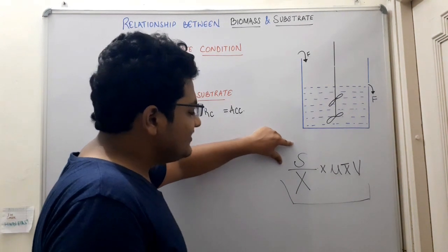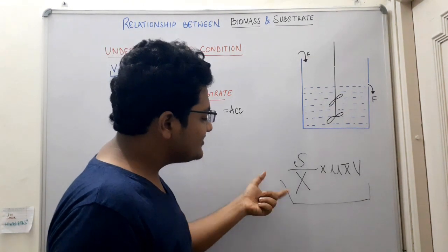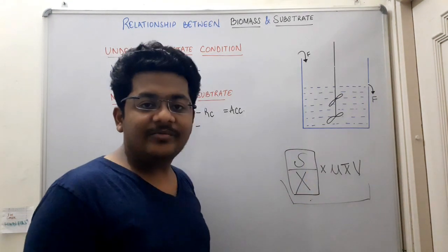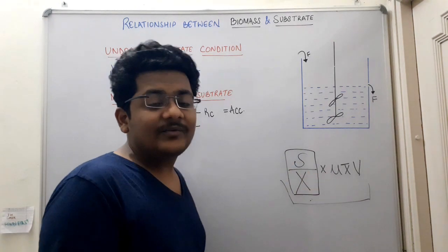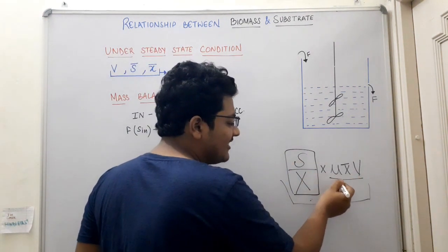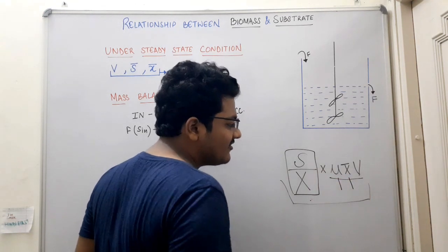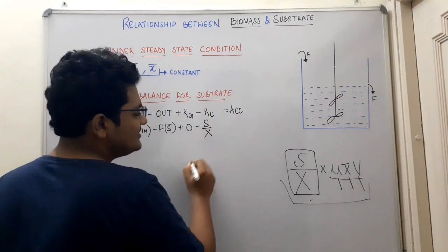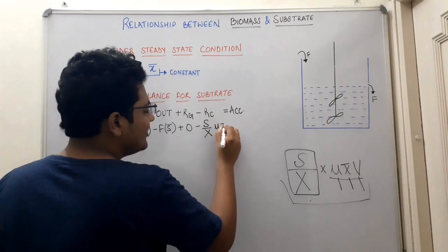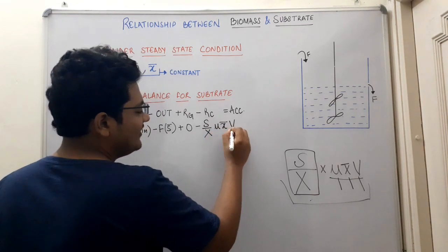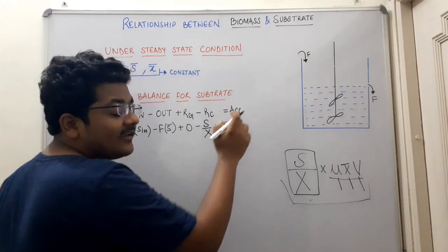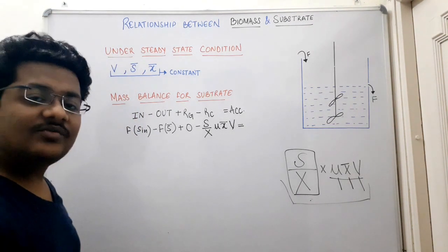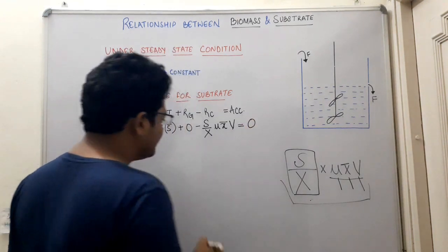To revise: S is the total substrate consumed, X is total biomass produced, and S/X gives substrate consumed per unit biomass. We multiply by the specific growth rate mu, biomass concentration X, and volume V. Accumulation inside the bioreactor is zero because volume is constant — nothing accumulates inside the bioreactor, so that term is also zero.